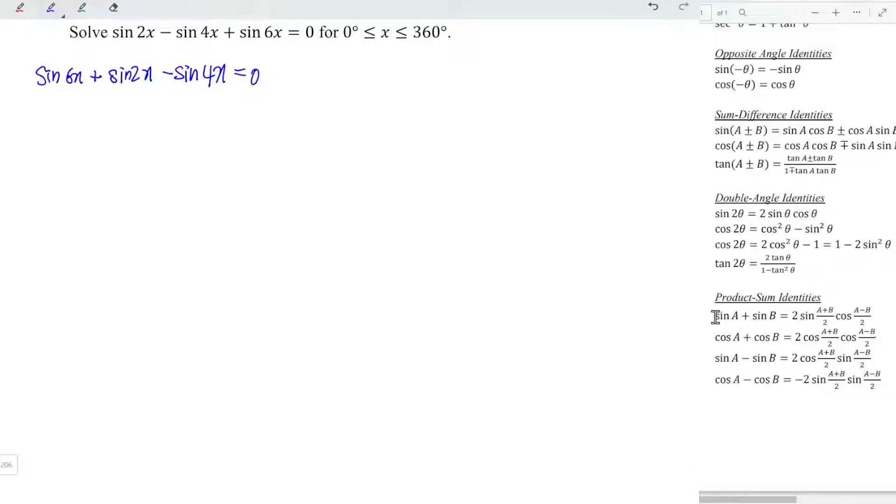Now we can apply the product sum identity. I'm going to use the first equation since we have a positive or plus sign in between the two terms. We are going to let A be equal to the higher angle, which is 6x, and B be equal to the lower angle, which is 2x. So A plus B divided by 2 is equal to 6x plus 2x divided by 2, which is 4x. Now we have A minus B divided by 2, so we have 6x minus 2x divided by 2, which is equal to 2x.